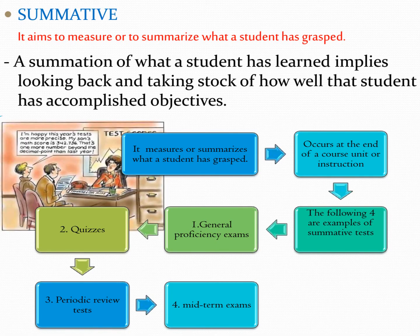The aim of summative assessment is to measure or summarize what a student has grasped and achieved. Summation means we look back and take stock of how well a student has accomplished his or her objectives. Because it measures what a student has grasped, it occurs at the end of a course unit or instruction. Examples of summative tests include general proficiency exams, quizzes, periodic review tests, and mid-term exams.